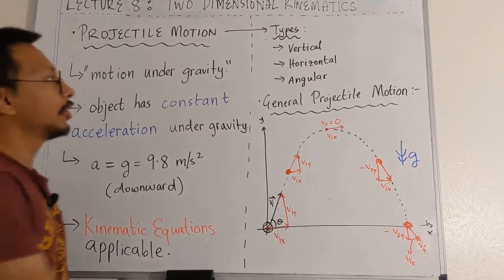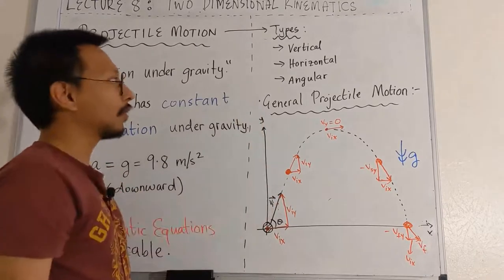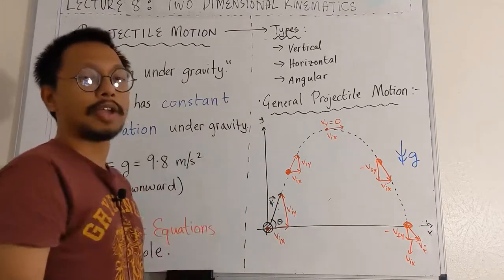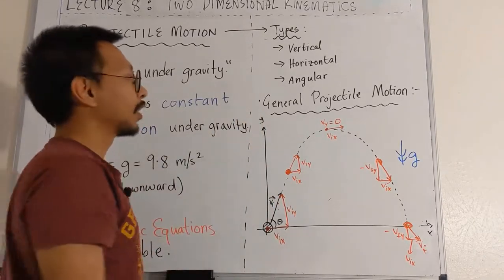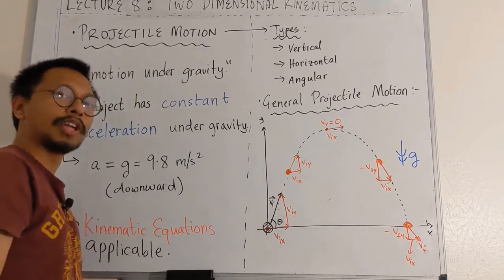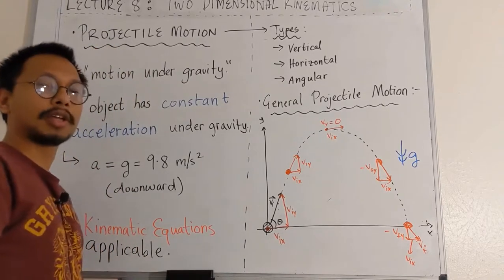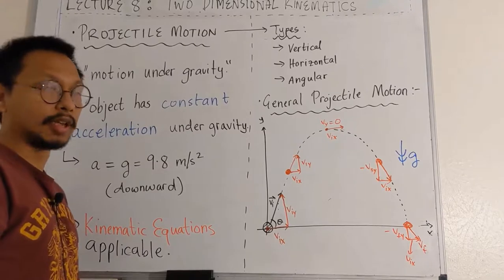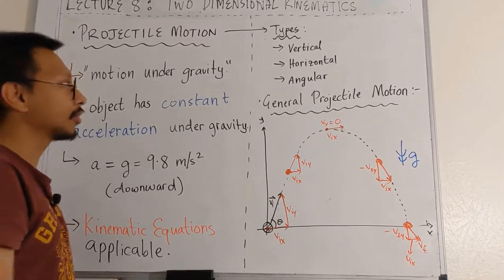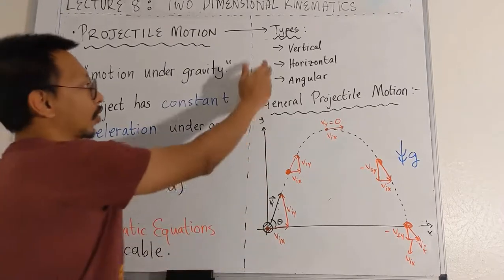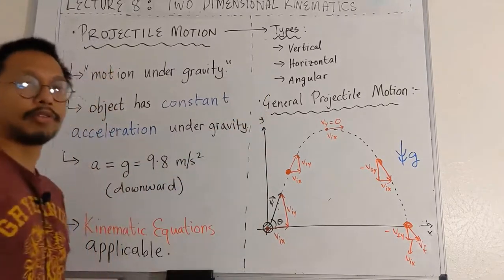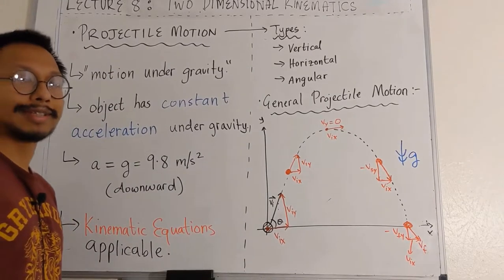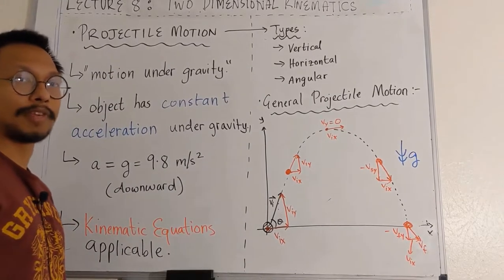There are three types of projectile motion: vertical, horizontal, and angular. Vertical is usually a one-dimensional kinematic problem which we have seen in a previous lecture. But horizontal and angular become two-dimensional motion, as we will shortly see in the form of examples.